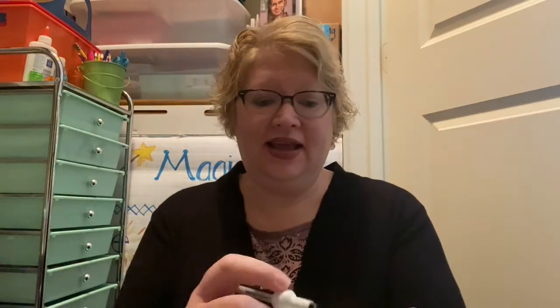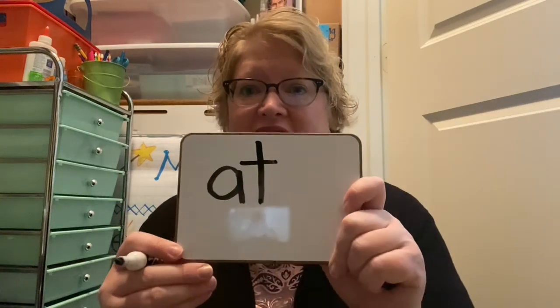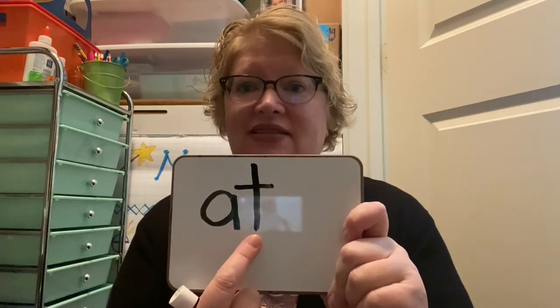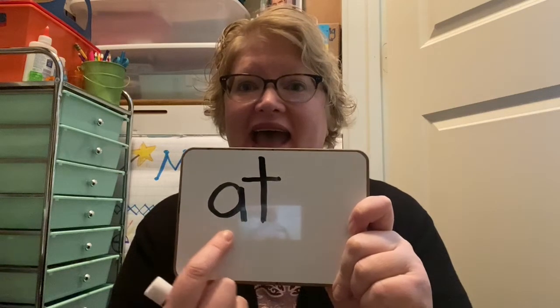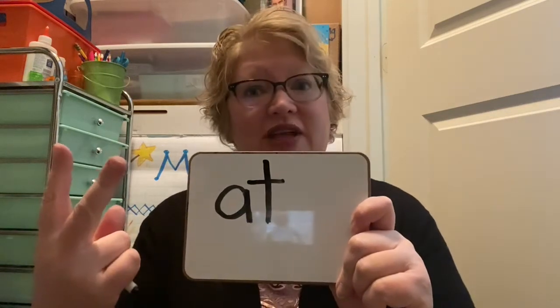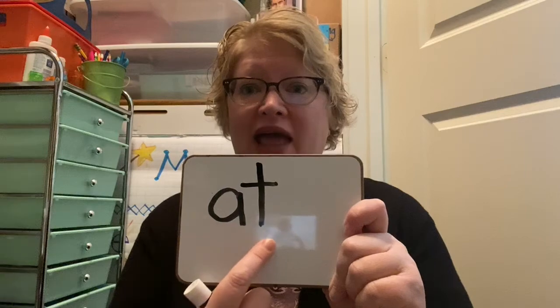For those of you who are just starting to read, we can put two letters together to make a word. So we have 'ah', and then the letter T makes the T sound. So our word is A-T — 'at'. See how two letters together make one word?